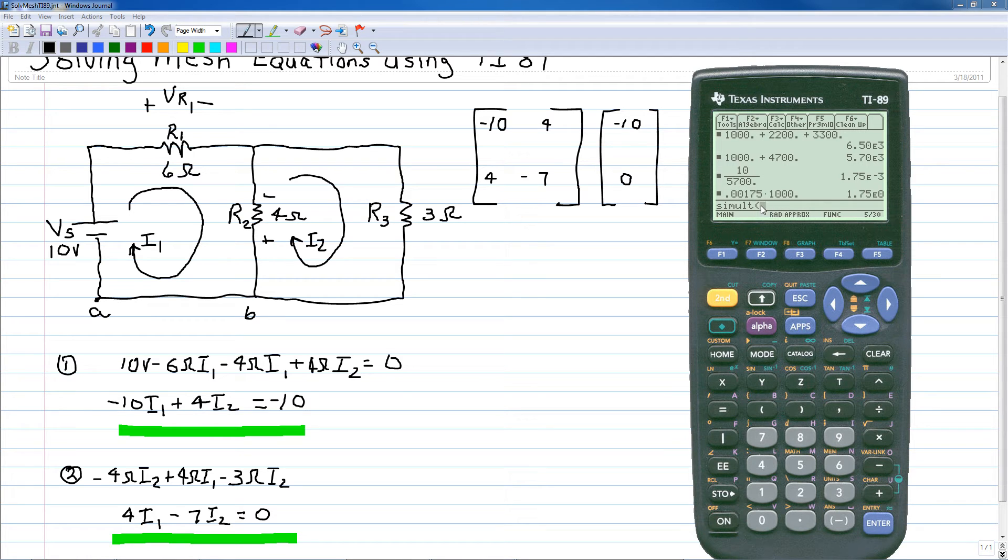Once in the simultaneous function, we want to enter these coefficients, and here's the order we enter them in. First we want to enter a brace, a left bracket, then -10. We're going to pick up the coefficients across the top line, comma and then 4. That takes the first equation.